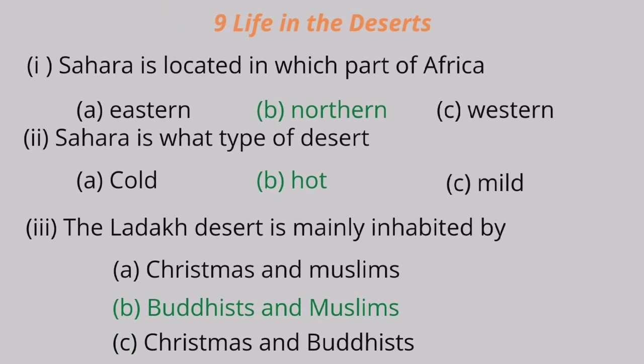Chapter 9: Life in the Desert. Question 1: Sahara is located in which part of Africa? A. Eastern, B. Northern, C. Western. The correct answer is Northern. Question 2: Sahara is what type of desert? A. Cold, B. Hot, C. Mild. The correct answer is hot type of desert.